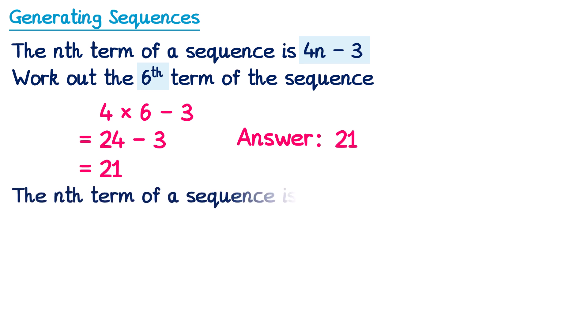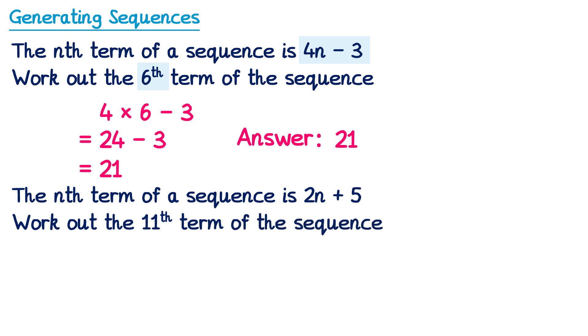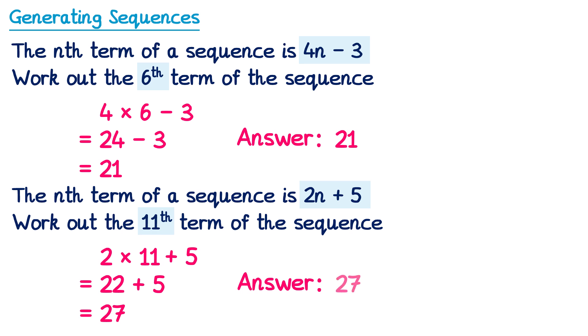If we had another question where the nth term was 2n plus 5, and we're asked to work out the eleventh term. So this time the nth term is 2n plus 5 and we want the eleventh term, so we'll substitute 11 for n. Instead of 2n, we've got 2 lots of 11, but then we need to add 5. 2 lots of 11 is 22, so we have 22 plus 5, which is 27. So the answer is 27.